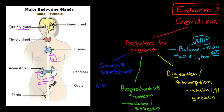The major endocrine glands include the pituitary gland. Just above the pituitary gland we have the hypothalamus, which is part of the brain but could also be considered one of the endocrine glands.